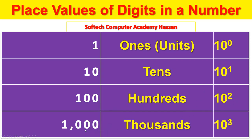Ones, tens, hundreds, thousands — that is 10 to the power of 3.